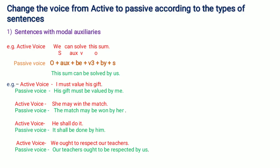Change the voice from active to passive according to the types of sentences. First are sentences with modal auxiliaries. You know there are different modal auxiliary verbs: can, could, may, might, must, need, and so on. If a sentence contains a modal auxiliary verb, then how to change that sentence into passive voice? We will learn it through an example.